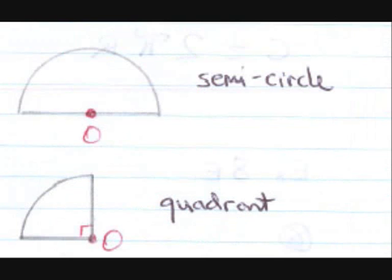And semi-circles. Just think of a football game. A semi-final, that means there's two games left. So with a semi-circle, two semi-circles make one circle.